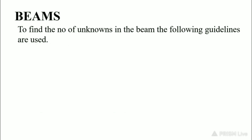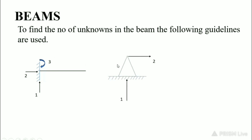Before discussing degree of indeterminacy in beams, we need to know about beam supports. There are mainly three supports: first, fixed support, which has three reactions — a horizontal reaction, a vertical reaction, and a moment. Second, hinged support, which has two reactions. Third, roller support, which has only one reaction.